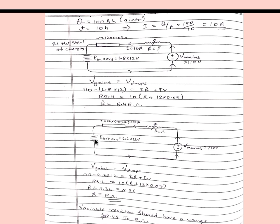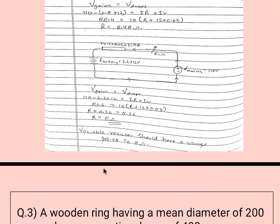So R is equal to 8.48 ohm at the start of charging. Now at the end of charging when the battery is full, the EMF becomes 2.2 times 12 volt. Internal resistance and current remain the same at 10 ampere, and V mains is still 110 volt. Applying the same voltage equation with EMF now equal to 2.2 times 12, and solving for R, we get R equal to 8 ohm. Therefore the variable resistor should have a range of 8.48 ohm to 8 ohm.